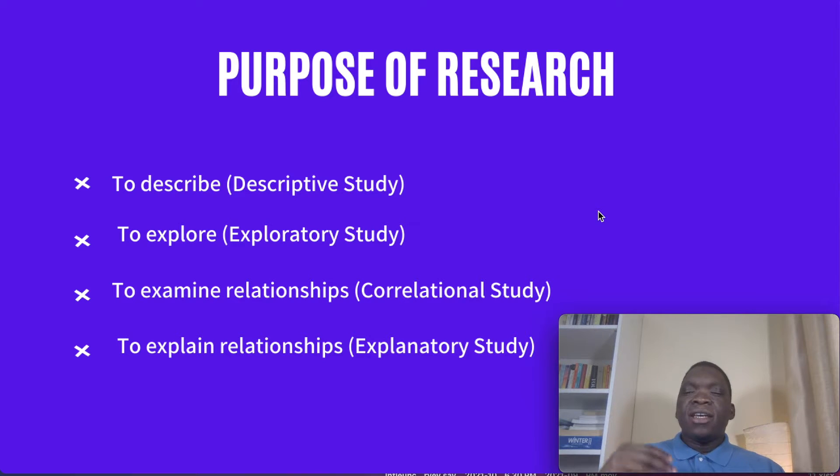The third purpose is to do a research that's examining relationship between two or more issues or two or more phenomenon or two or more concepts. When you do that, you are doing correlational study. So correlational studies tends to explain the connection, the association, the relationship, the nexus between two or more issues. So in the case of descriptive and exploratory, you only focus on one issue, but when it comes down to correlational study, you can have two or more.